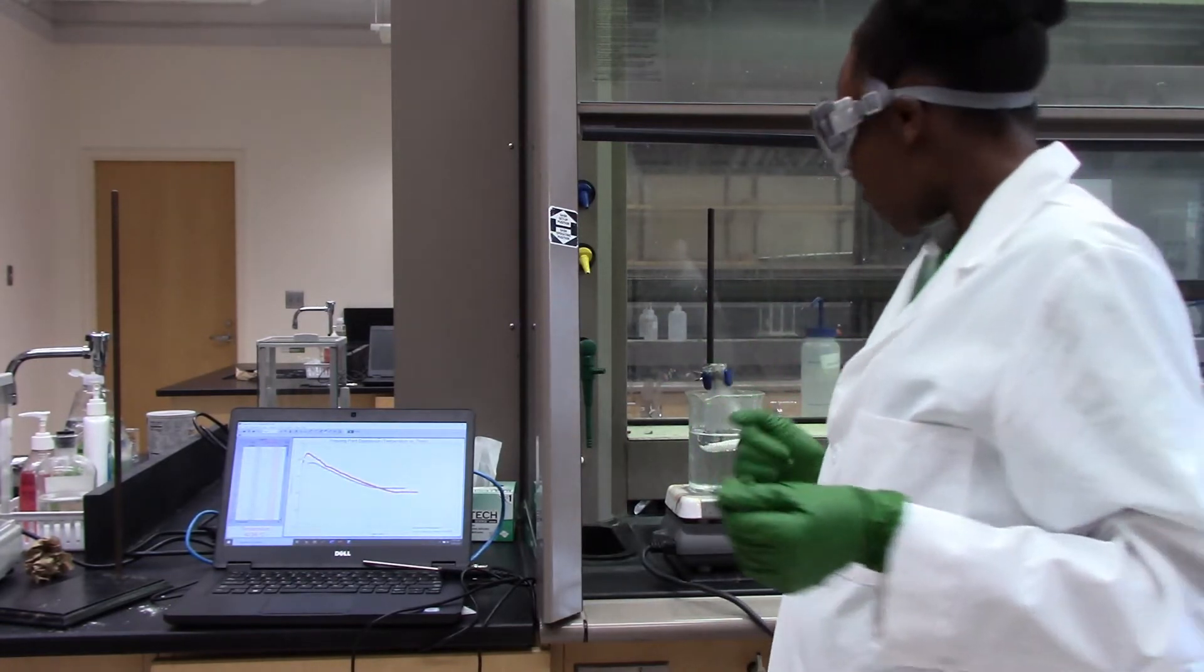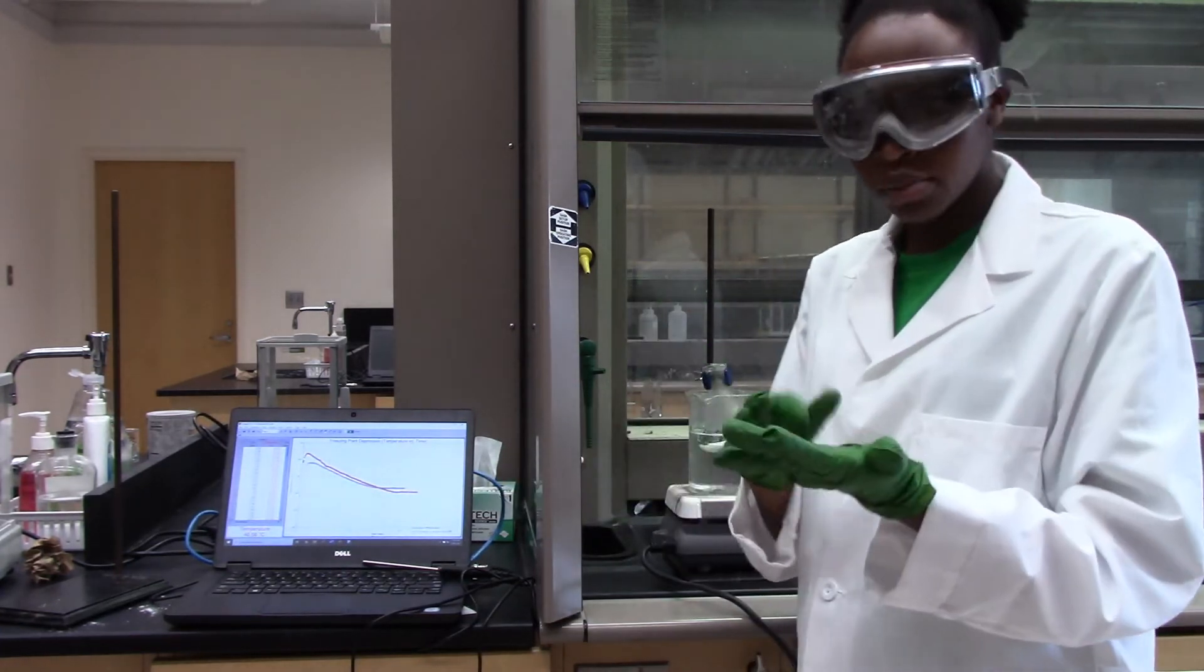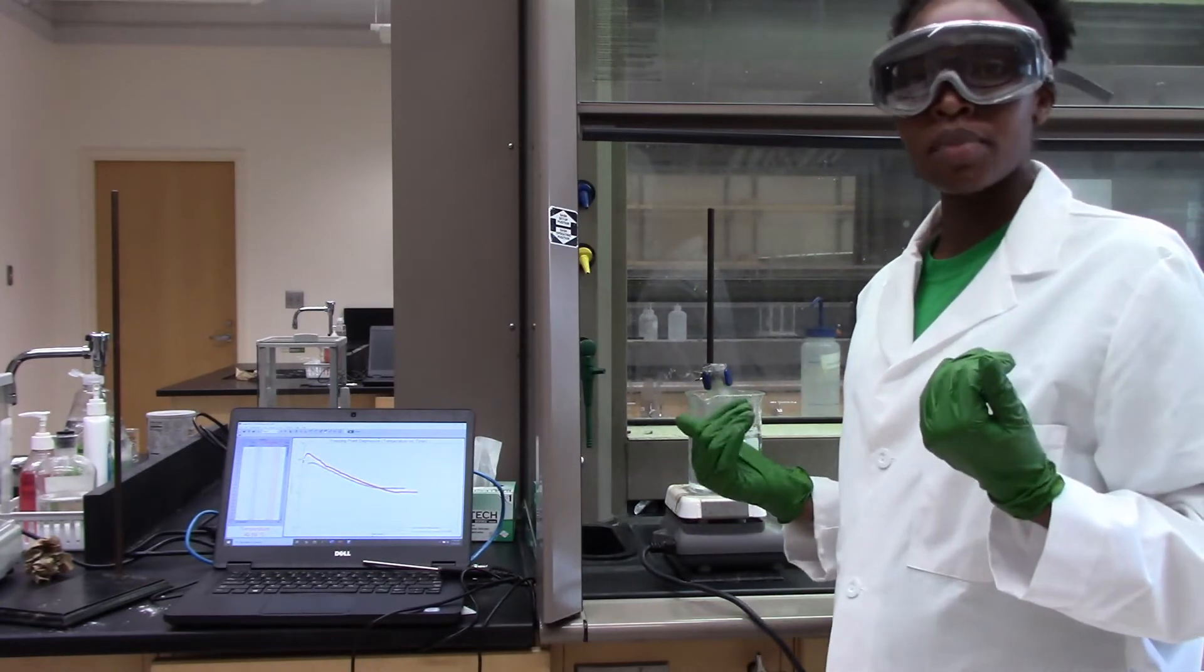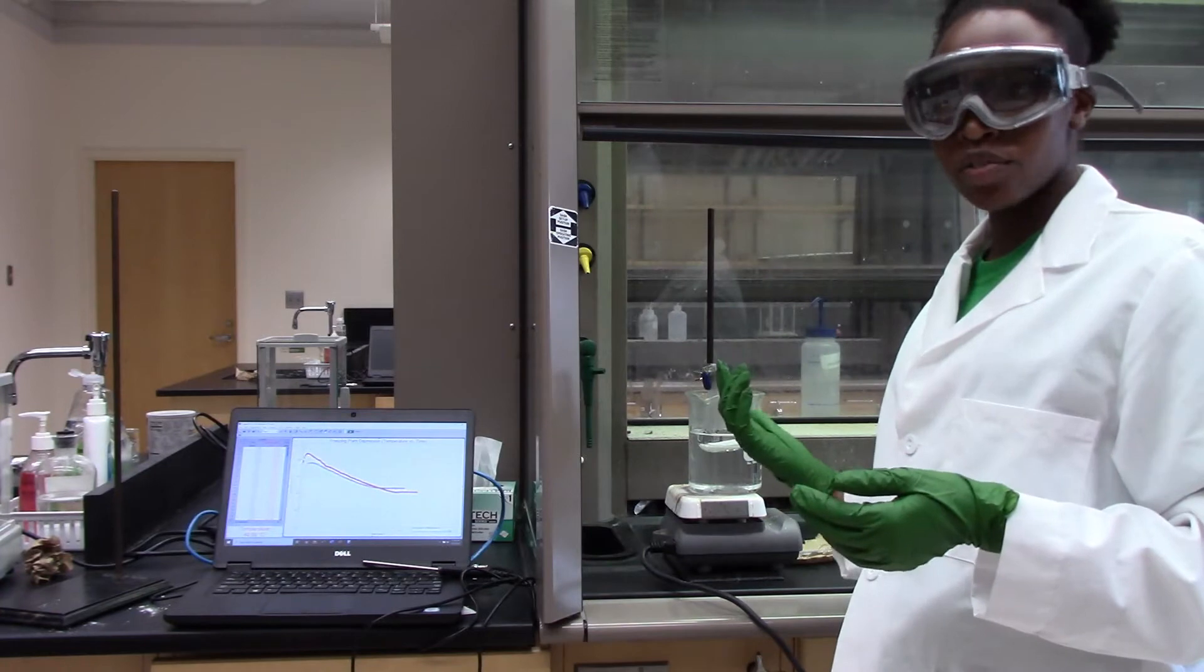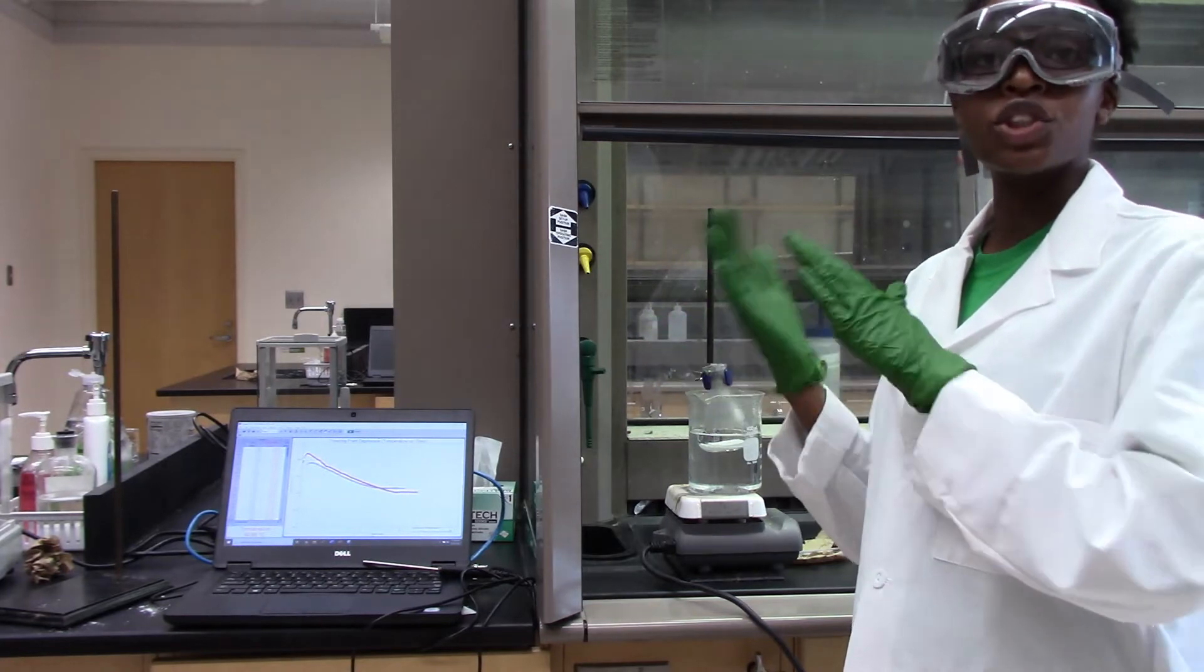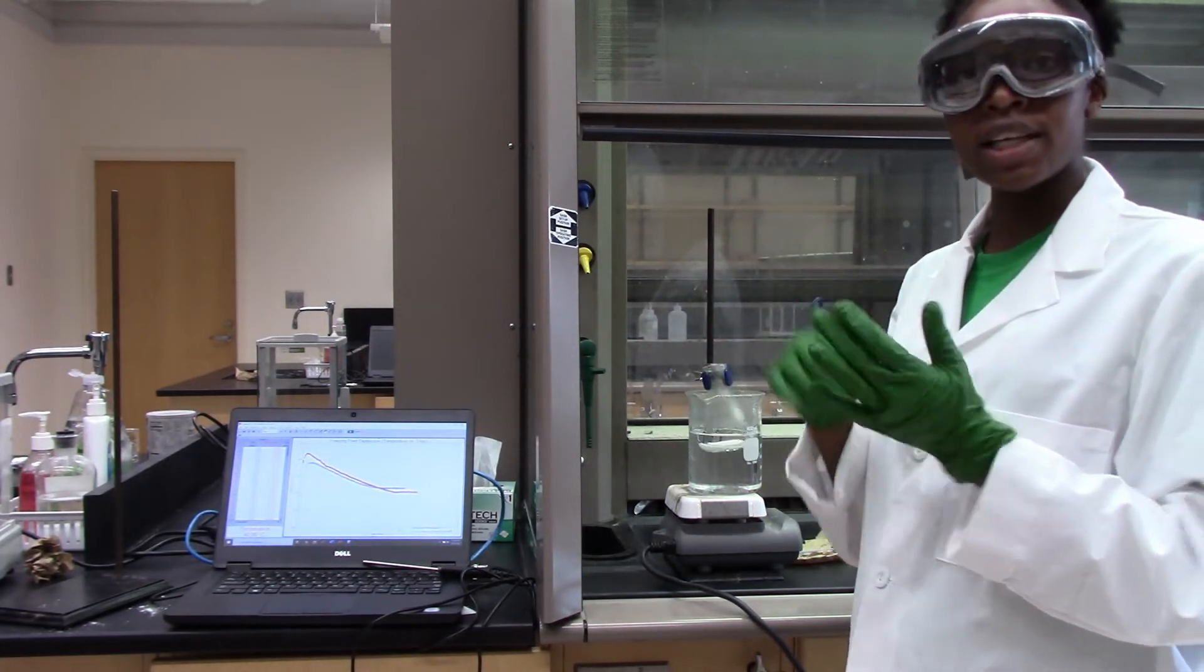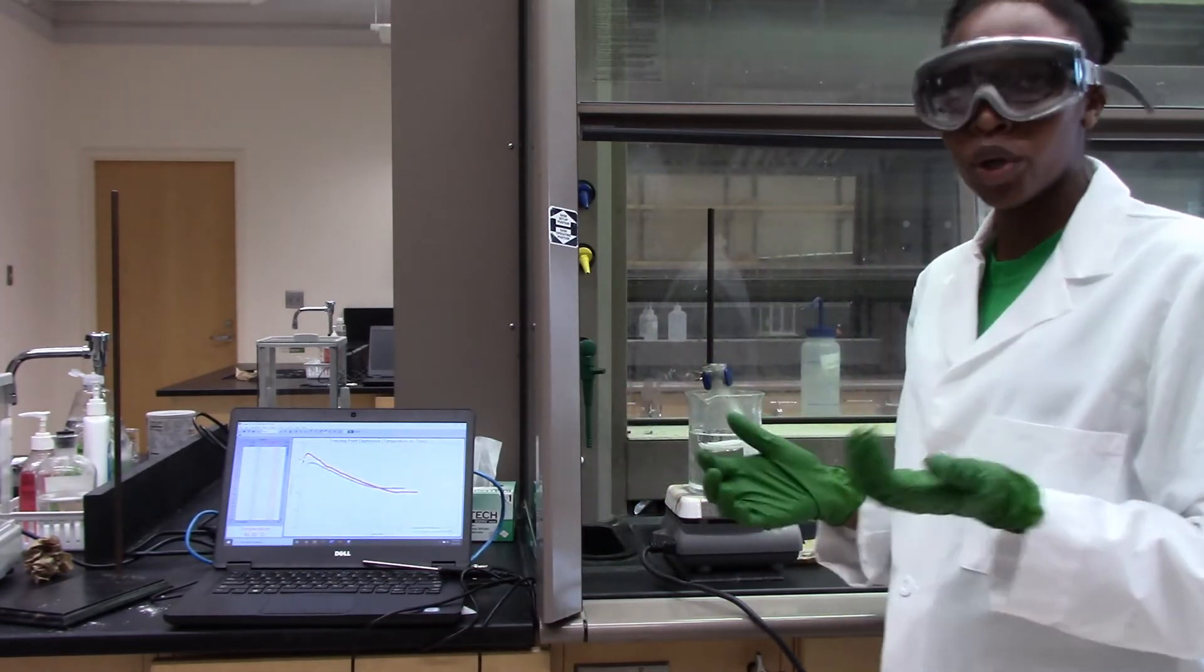So I'm going to heat this water above the melting point of lauric acid. I'll keep it about above 60 degrees Celsius. And once I have it in a liquid form, then the temperature that I will be taking is for it to change back to the solid from a liquid state. So when it does that at a constant temperature, that will be my freezing point for the pure lauric acid.